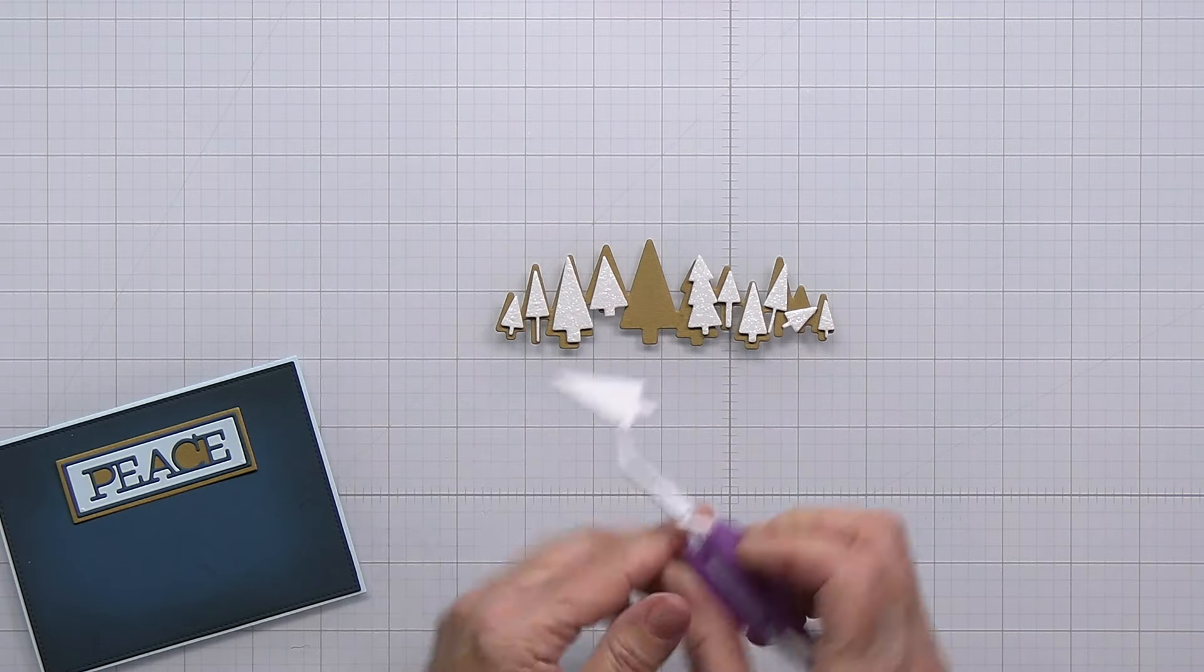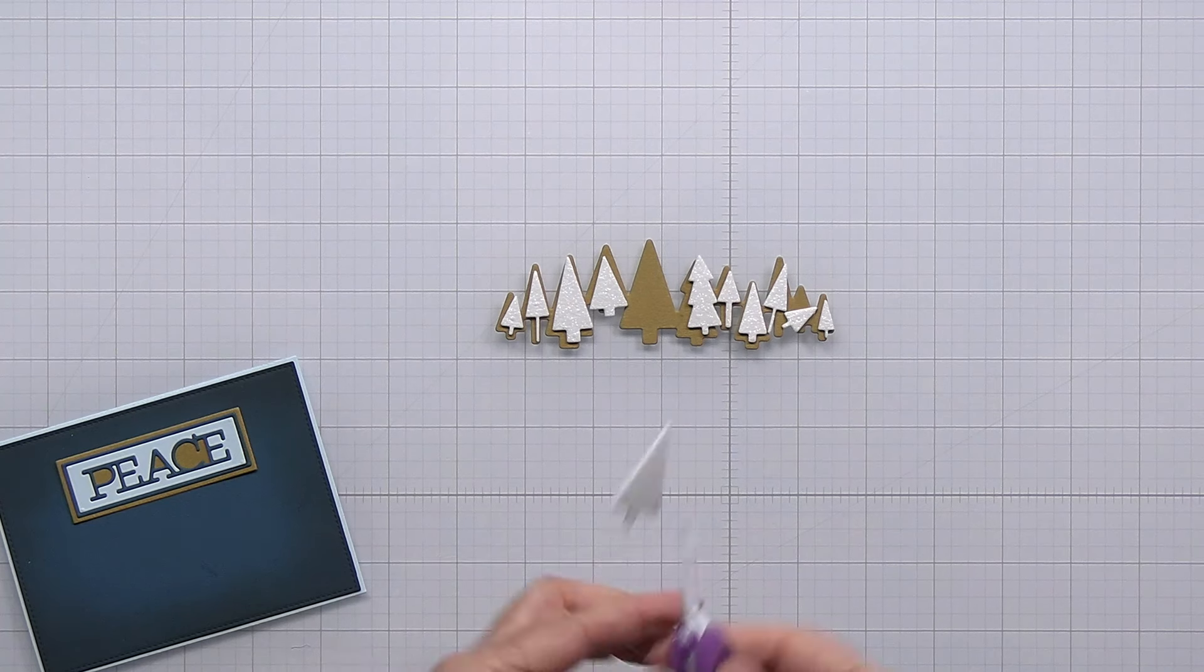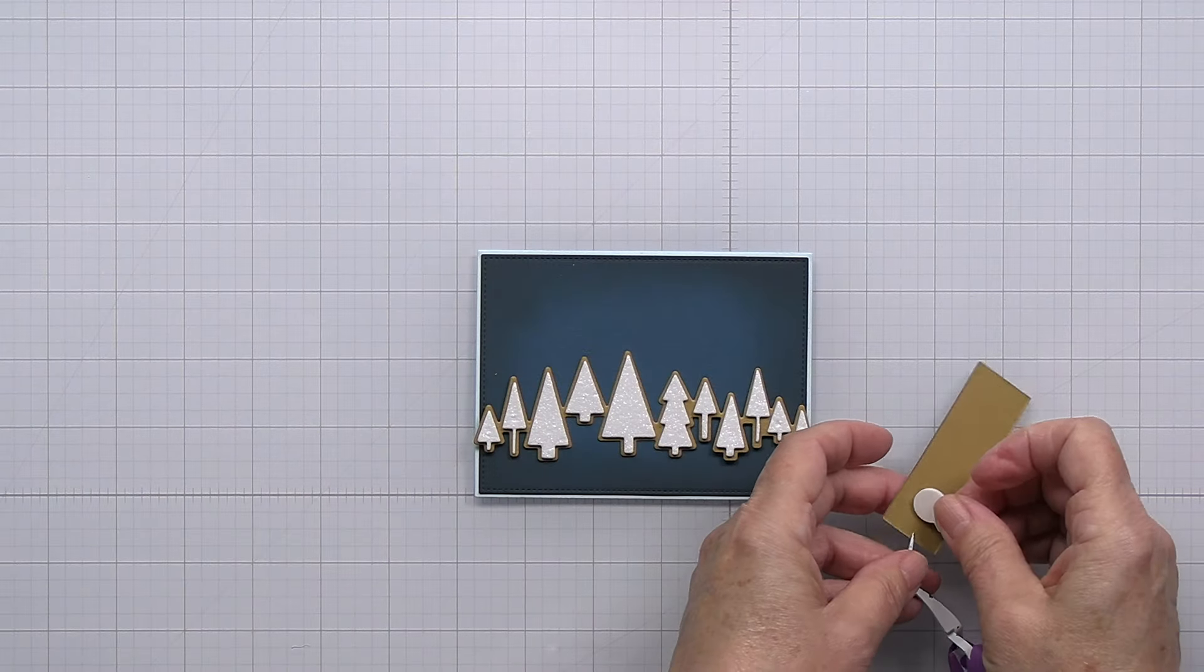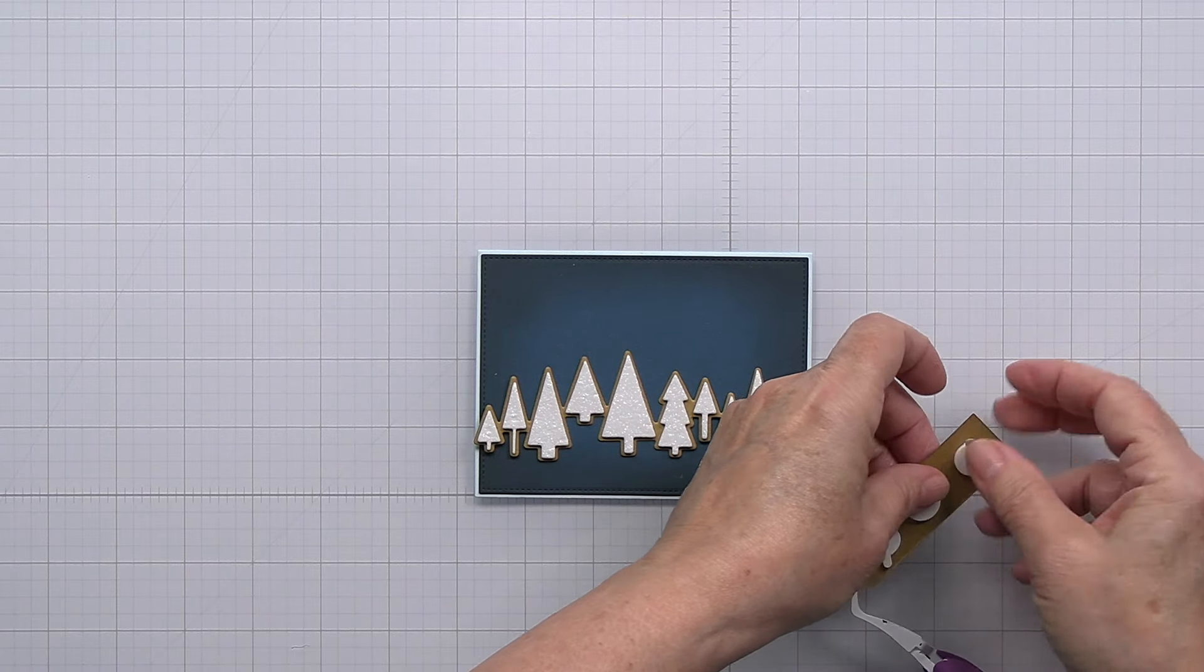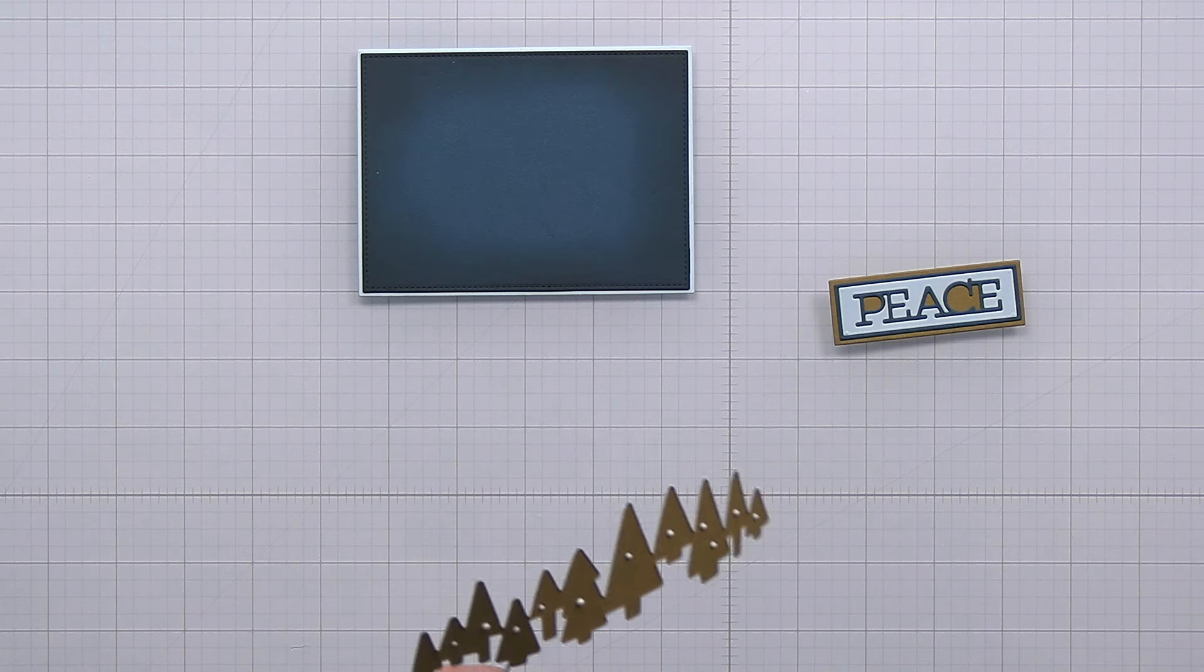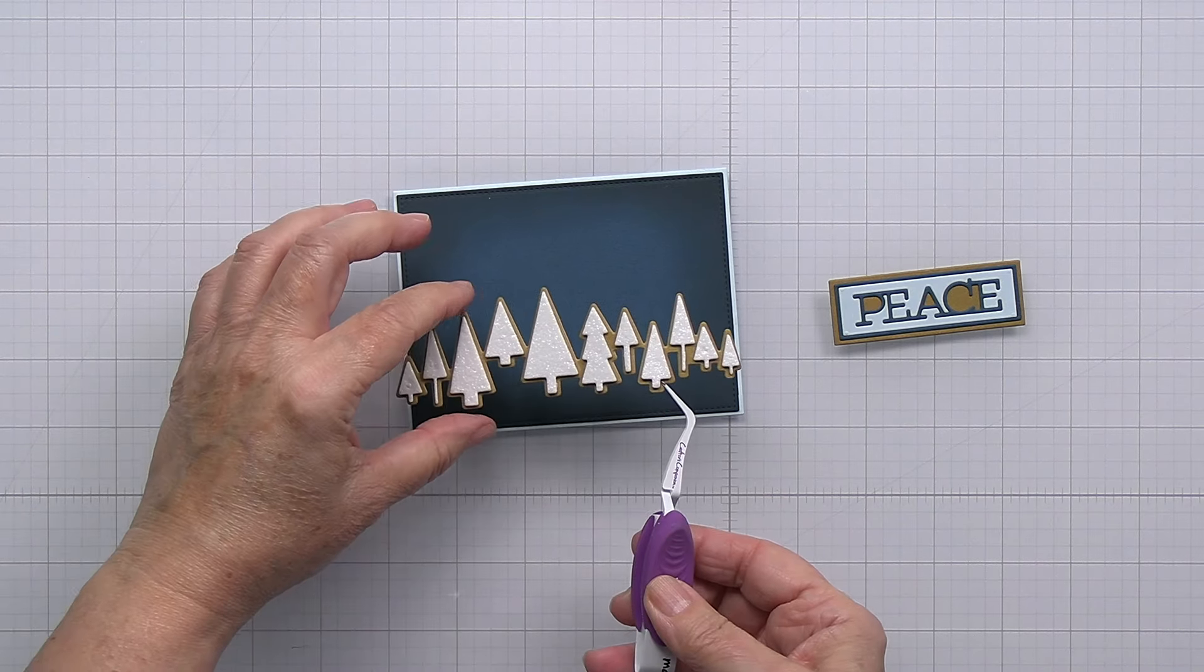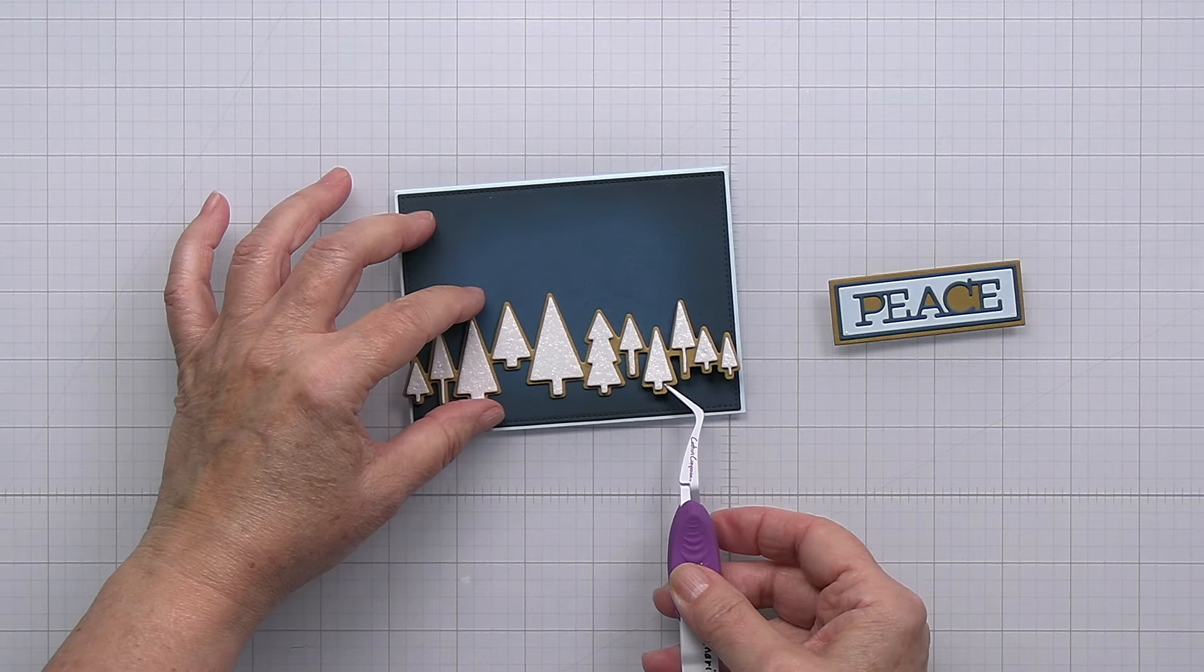Now this is from the Merry Trees die so that die set includes the background die and then the intricate die that cuts out all the individual trees so I used that mustard color for the backdrop and then I used Spellbinders glitter foam to die cut out those white trees and I just glued those on top and now I'm going to go ahead and adhere the trees down kind of like at the bottom because this is like I said this is sort of like a nightscape that I'm trying to create here.